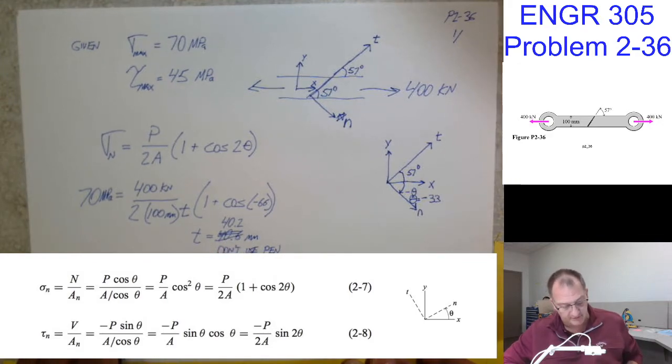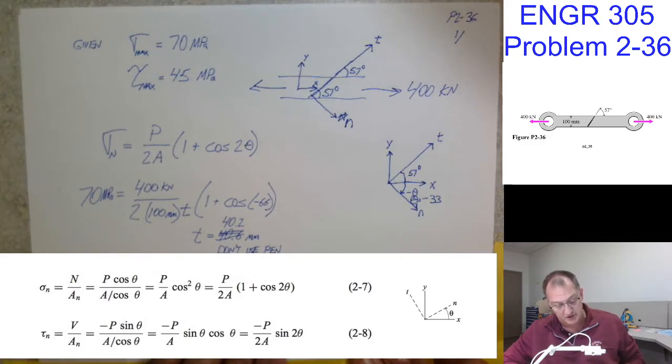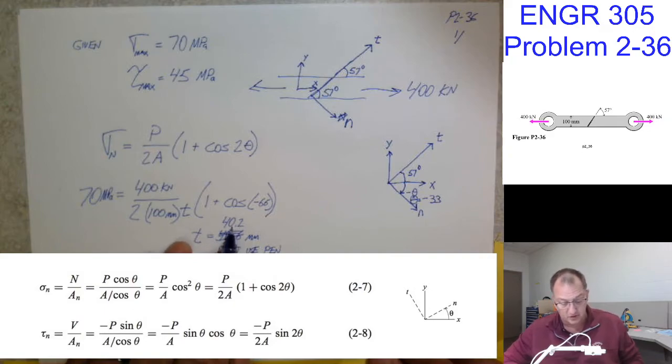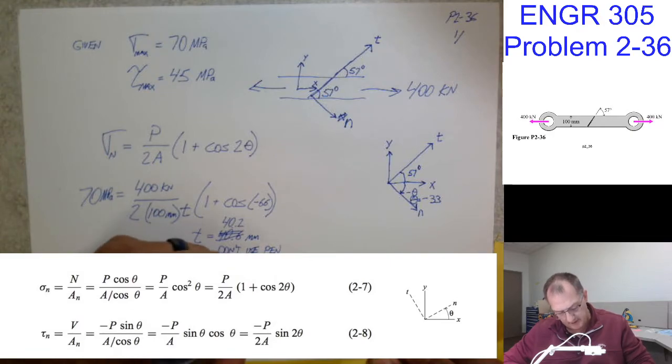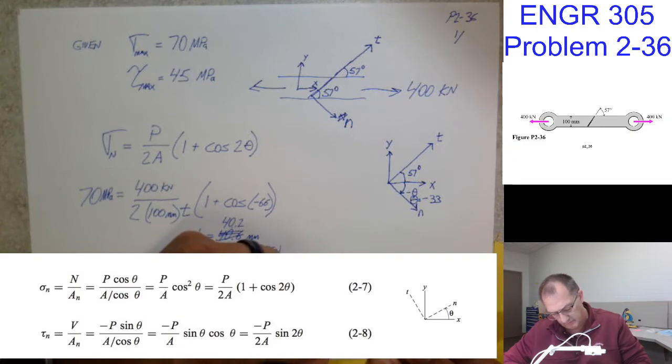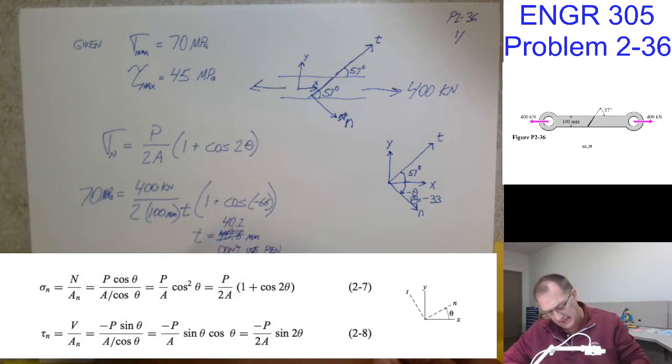And so we came up with the answers that said the thickness, if I was going to have 70 megapascals, I would be 40.2 millimeters thick. And if I want to keep my stress less than that, then my thickness, because those are opposite, this could be larger. And then I solved it again for shear. So I need to use, I need to be, it has to be this or bigger or this or bigger. So the answer is it needs to be 40.6 millimeters or larger is my answer. And that's why I like this problem.